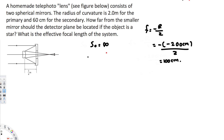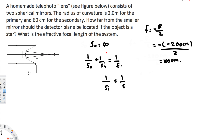We can find the image distance using the Gaussian relation: 1 over SO plus 1 over SI equals 1 over F. Since the object distance is infinity, the 1/SO term becomes zero, so 1 over SI equals 1 over F. This gives us SI equal to 100 centimeters. So the image distance for the first spherical mirror is 100 centimeters.